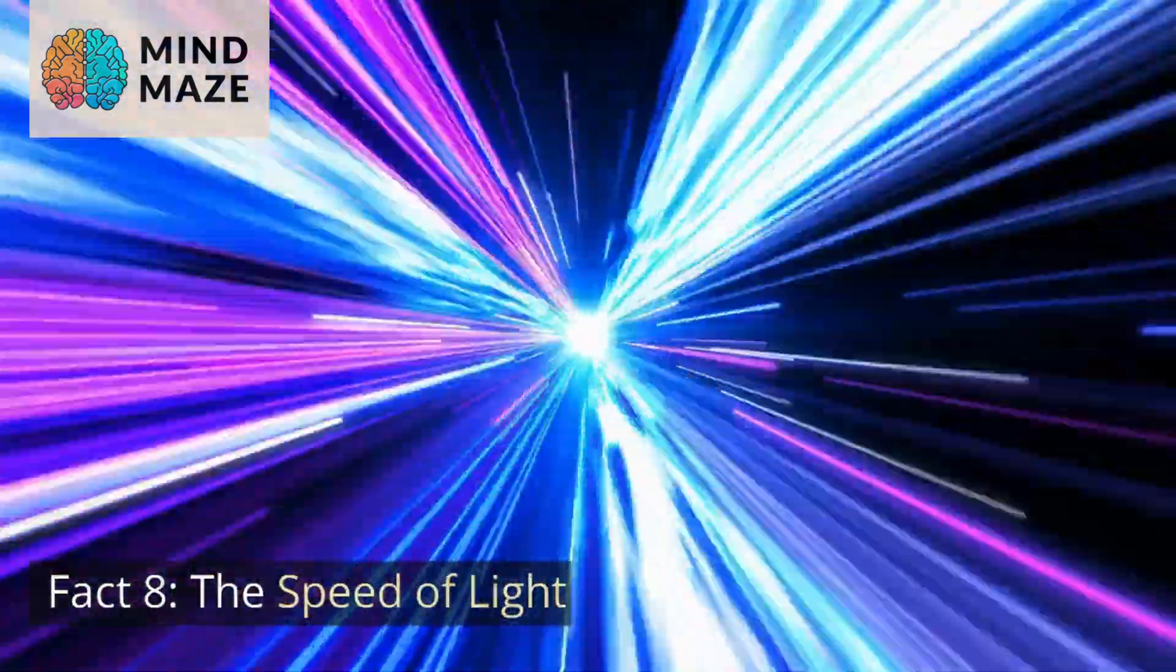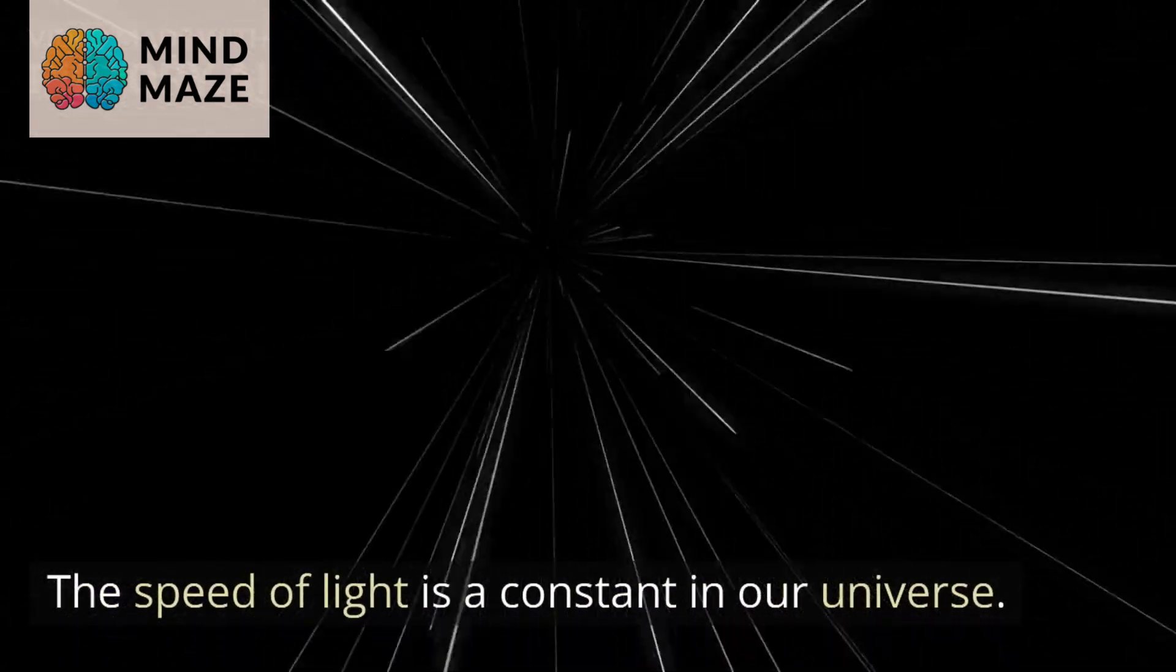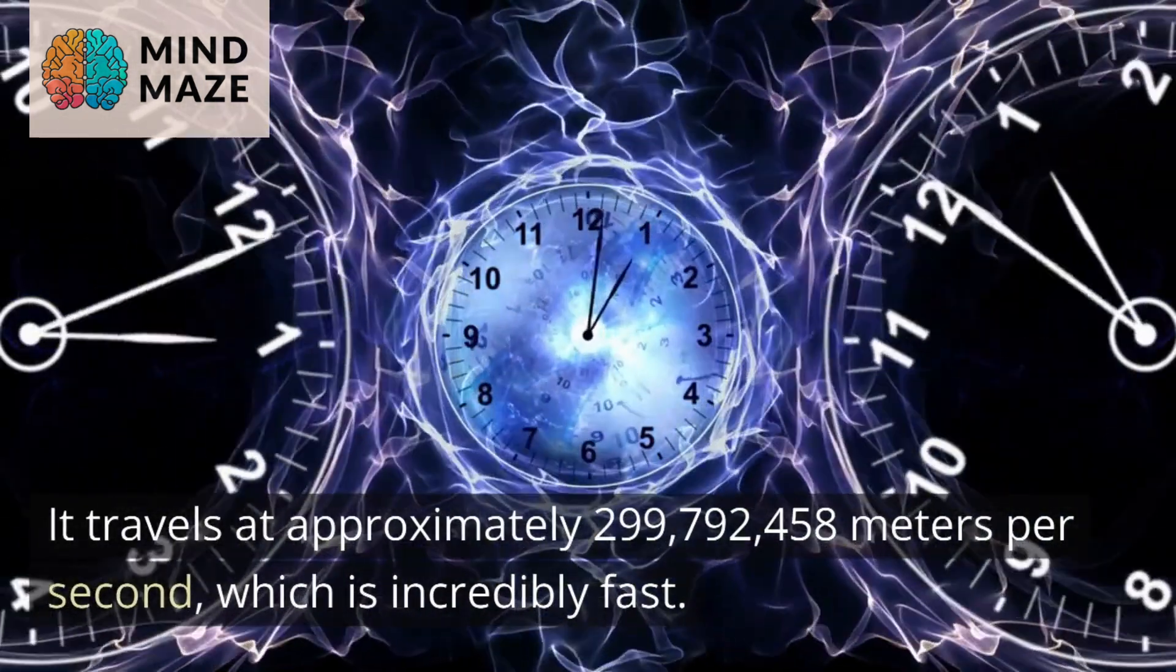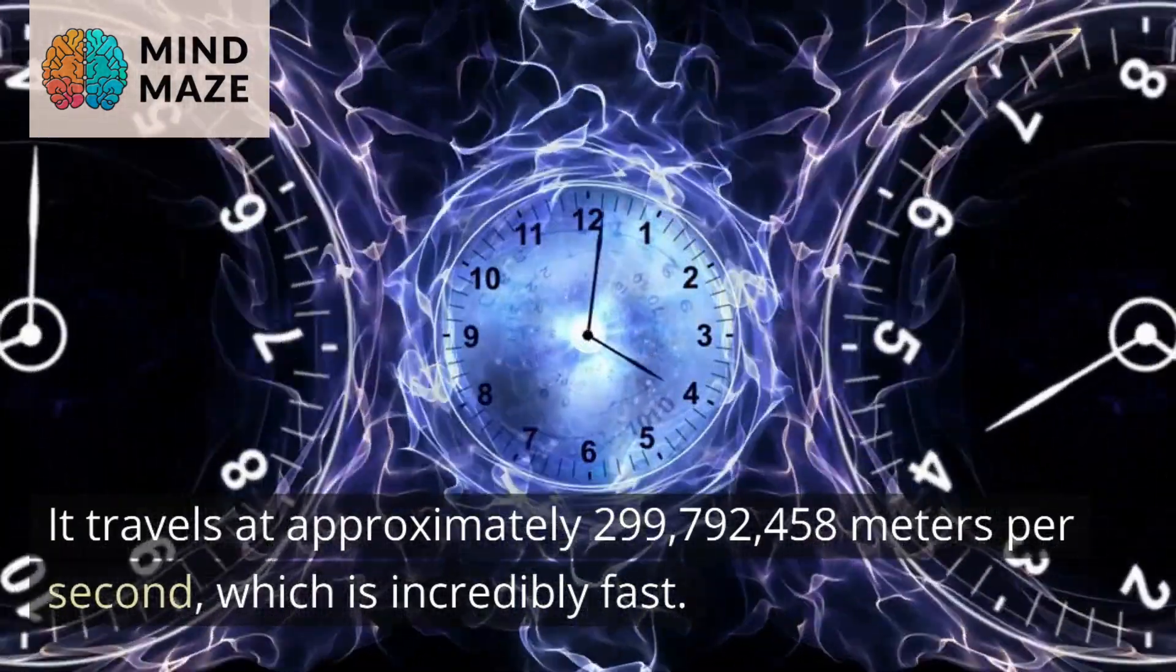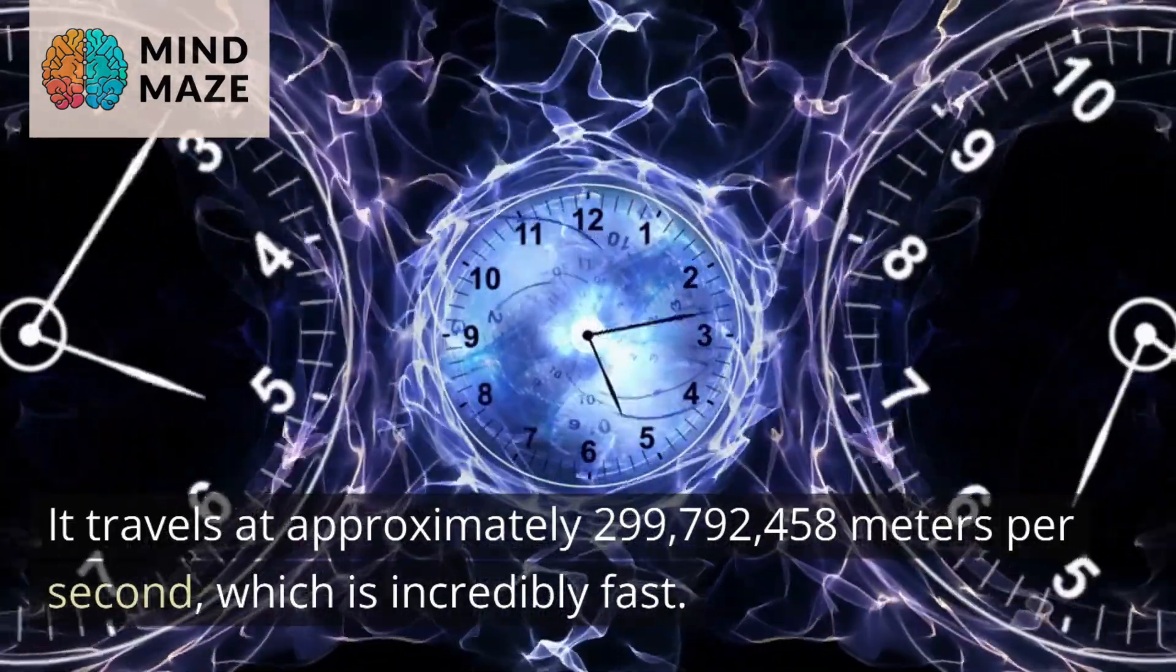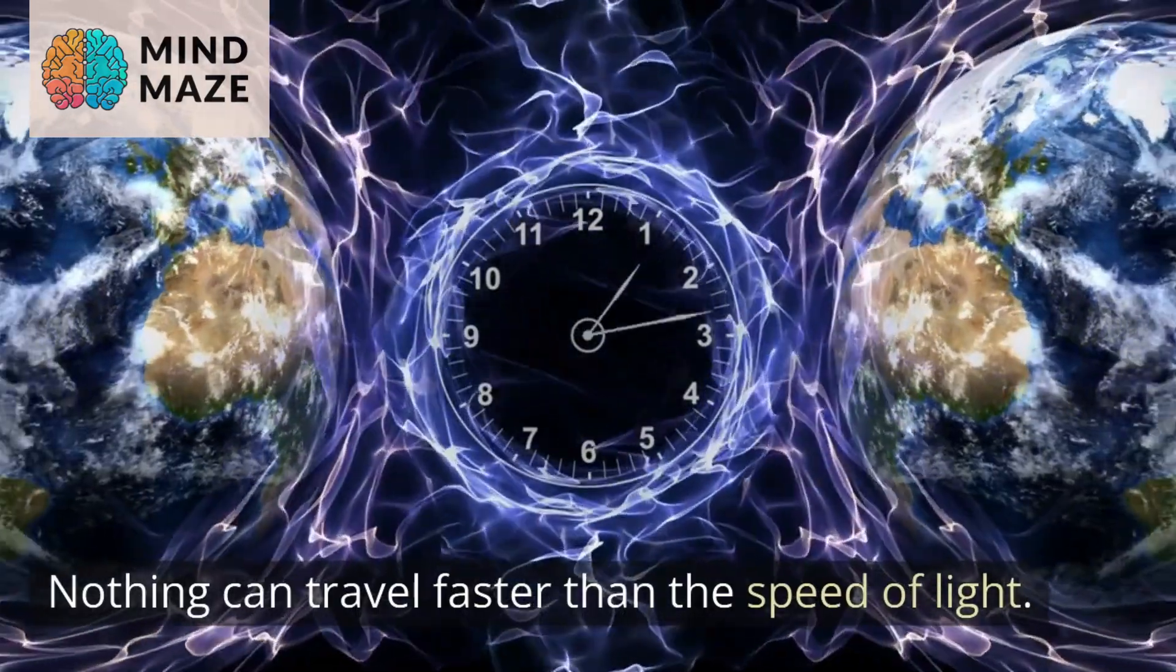Fact eight: The speed of light. The speed of light is a constant in our universe. It travels at approximately 299,792,458 meters per second, which is incredibly fast. Nothing can travel faster than the speed of light.